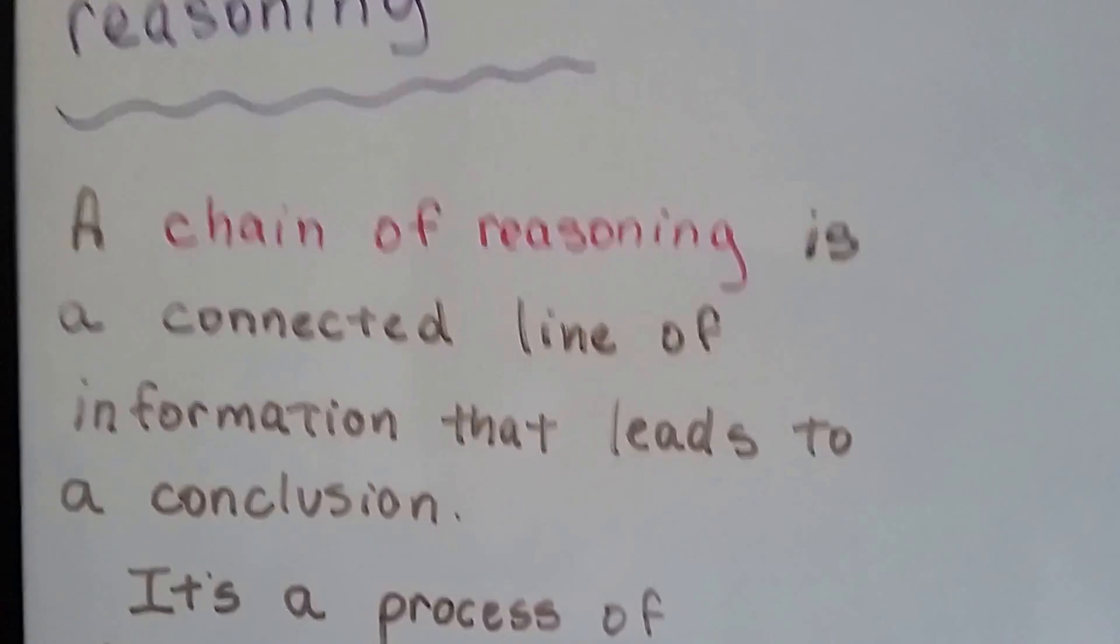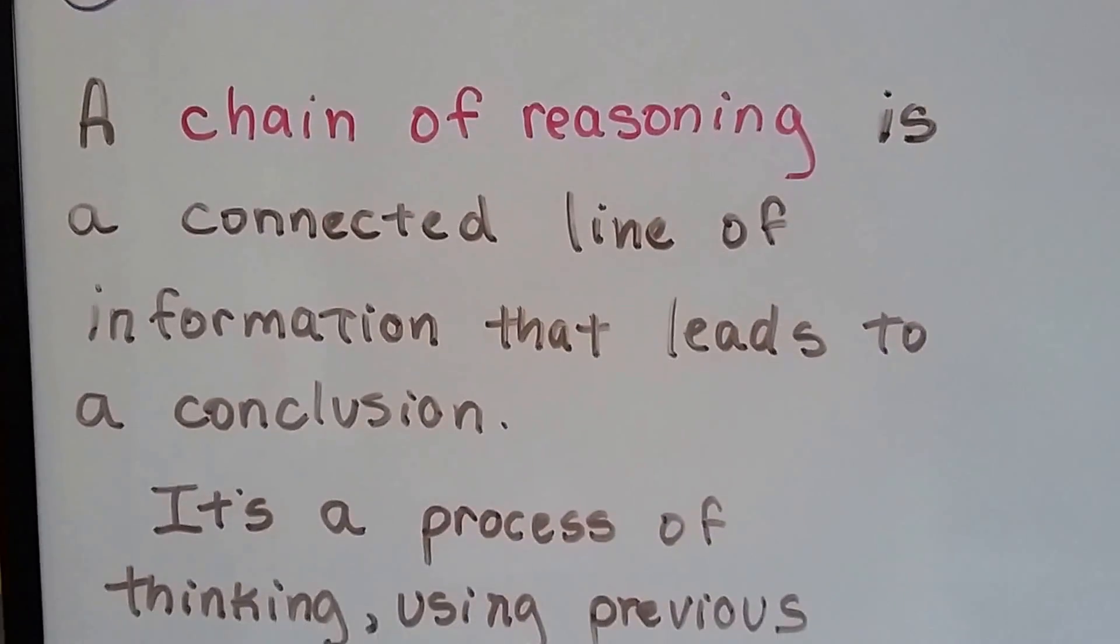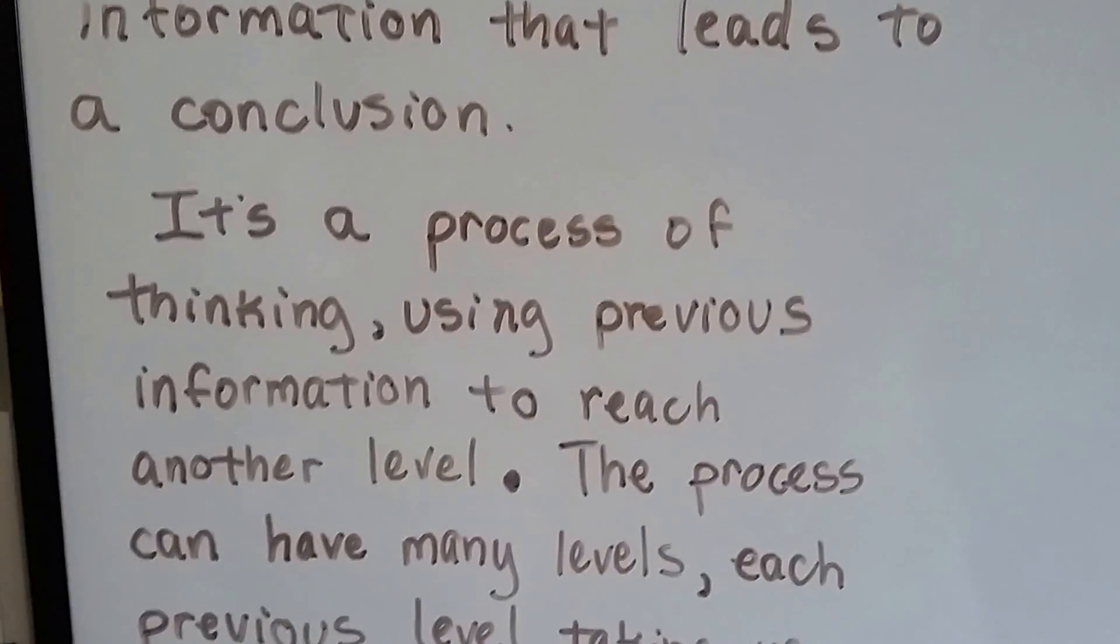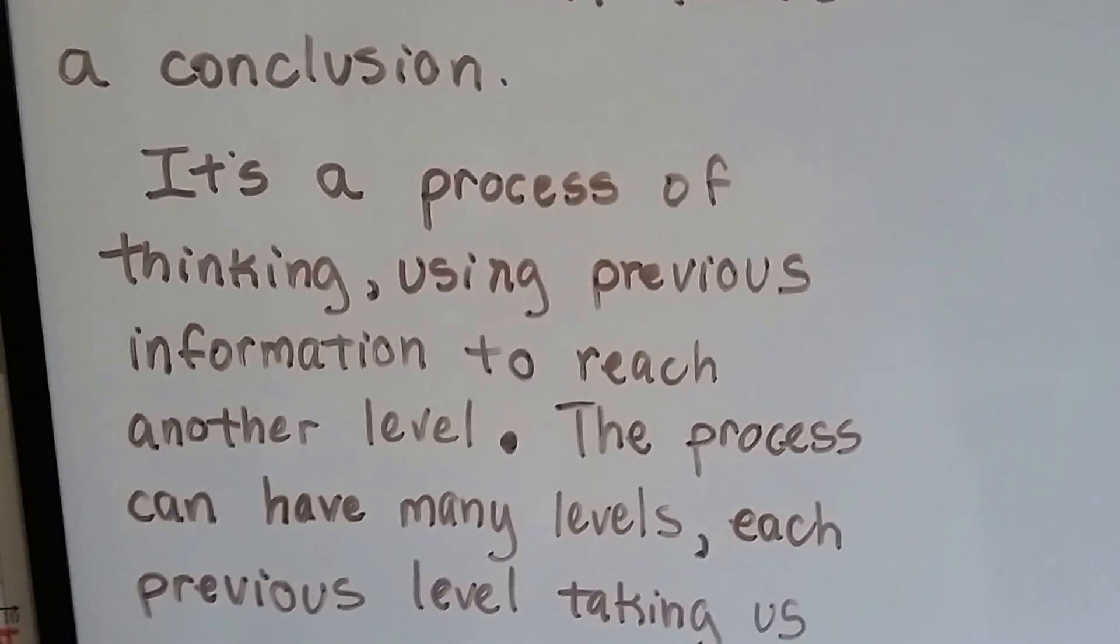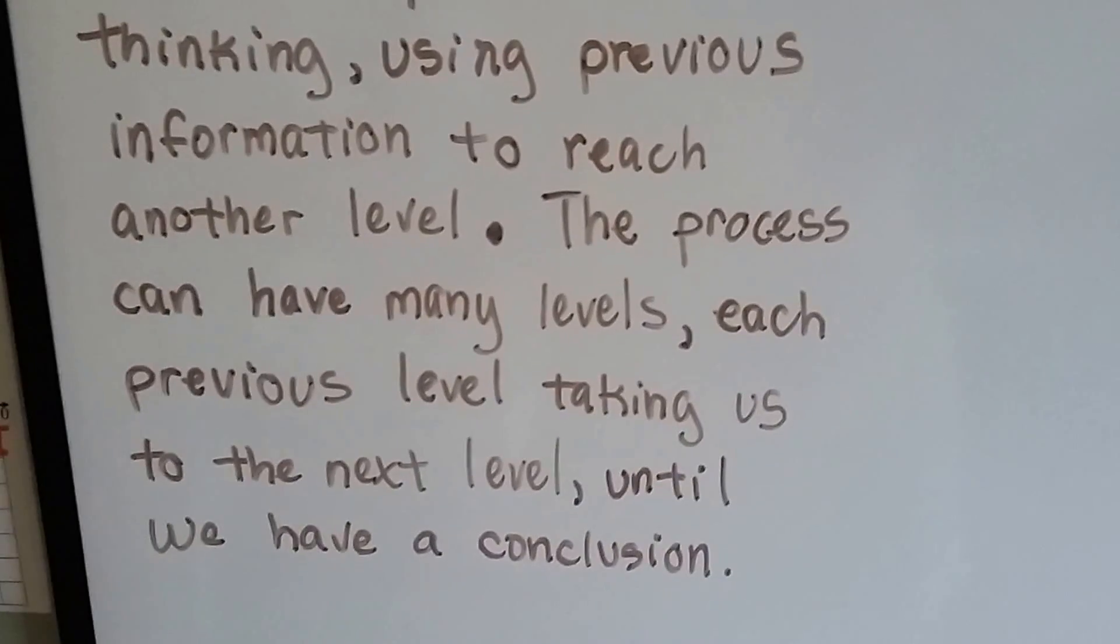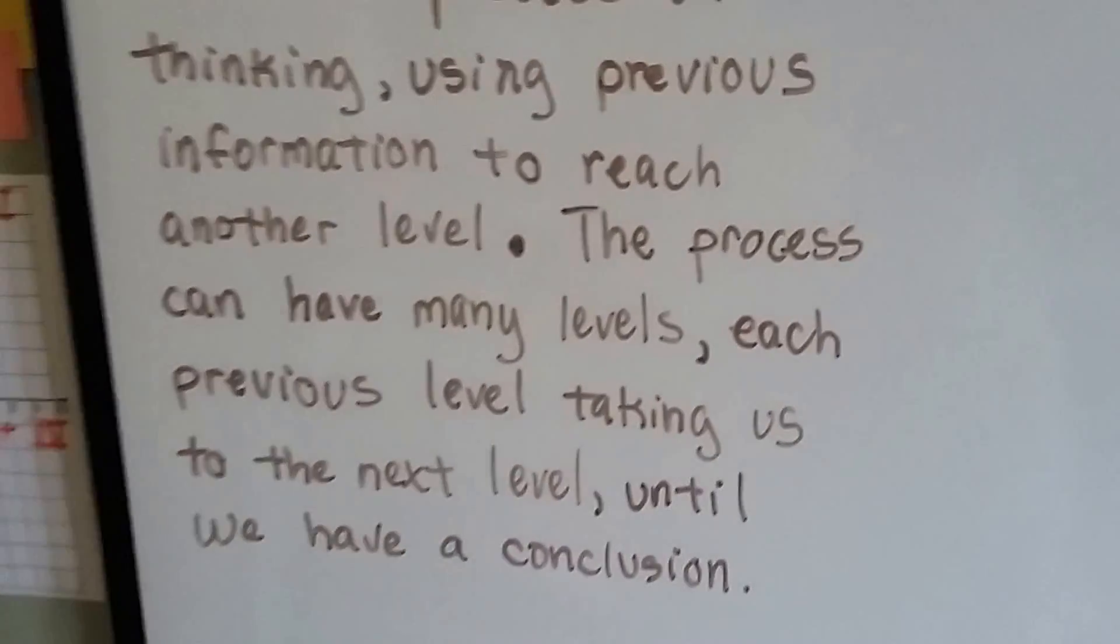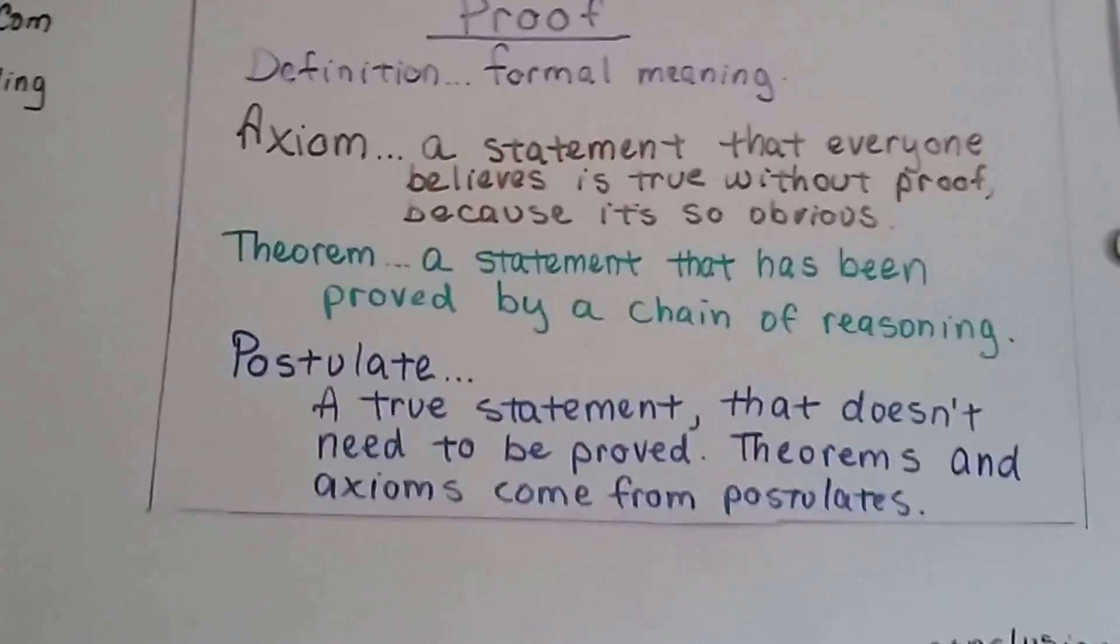A chain of reasoning is a connected line of information that leads to a conclusion. It's a process of thinking, using previous information to reach another level. The process can have many levels, each previous level taking us to the next level until we have a conclusion. And that's what we've been doing for the last few videos. We've been proving things.